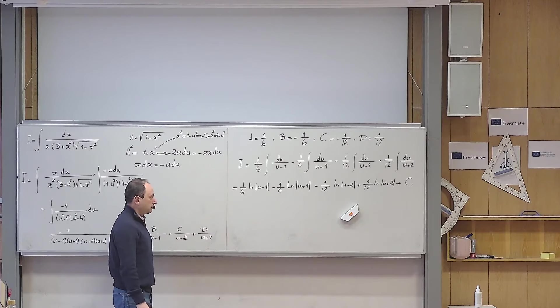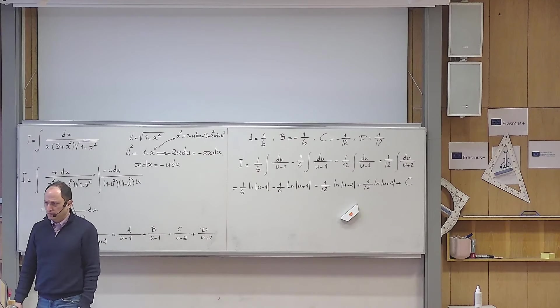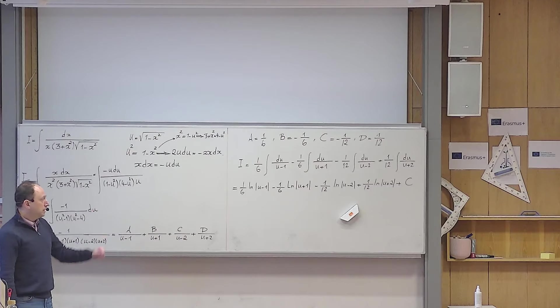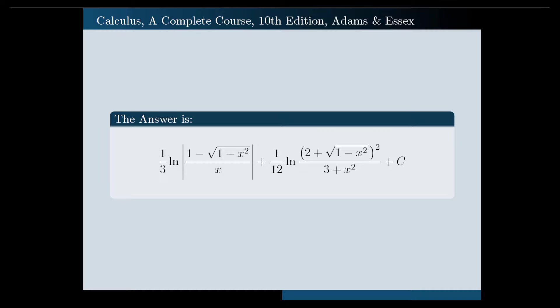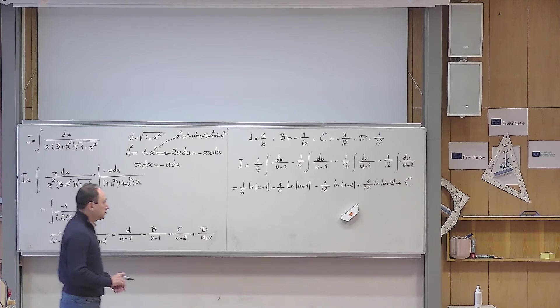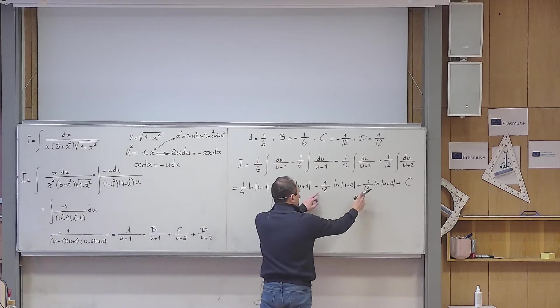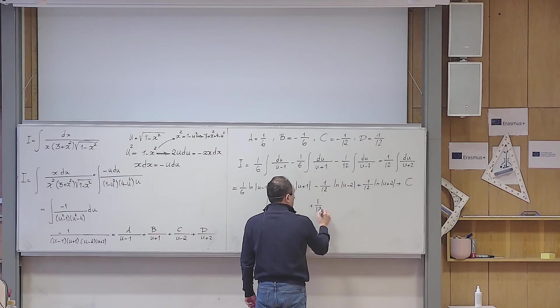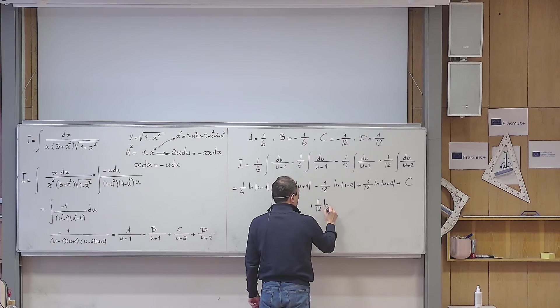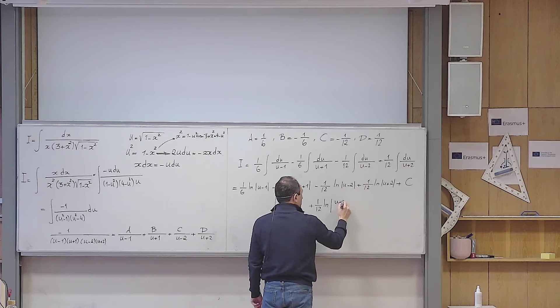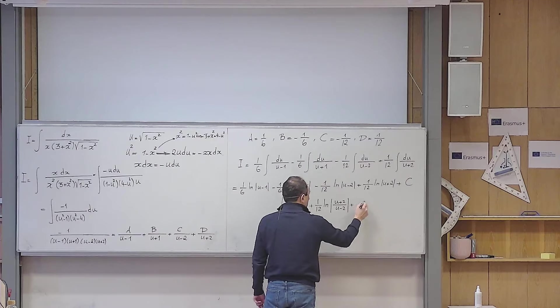Of course I have to switch back to the old variable x. But let me take some motivation from the answer in the book and manipulate this algebraically to show it is equivalent to the book's answer. I see factors of 1 over 6 and 1 over 12, so it motivates me to factor out 1 over 12, combining the last two logarithms as ln of their ratio.